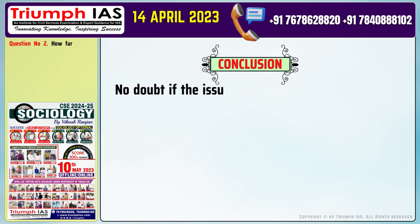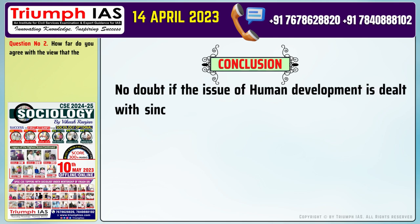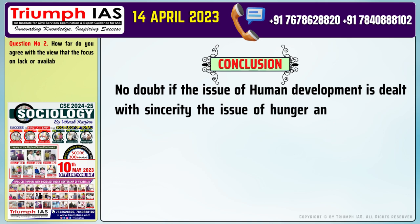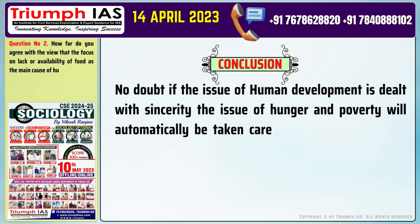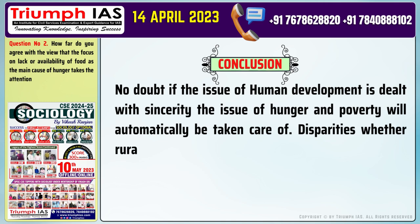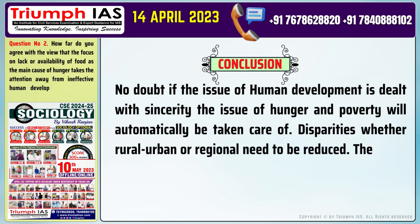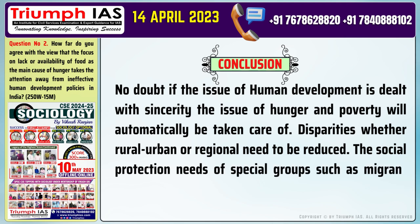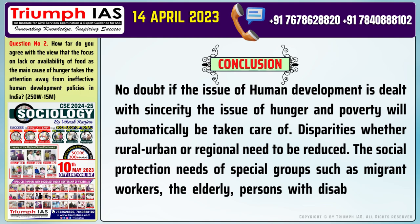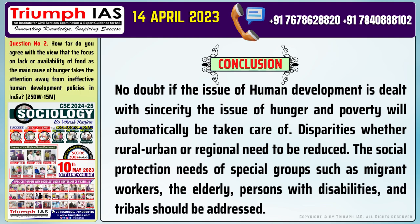Conclusion of the answer: No doubt, if the issue of human development is dealt with sincerity, the issue of hunger and poverty will automatically be taken care of. Disparities, whether rural-urban or regional, need to be reduced. The social protection needs of special groups such as migrant workers, the elderly, persons with disabilities, and tribal communities should be addressed.